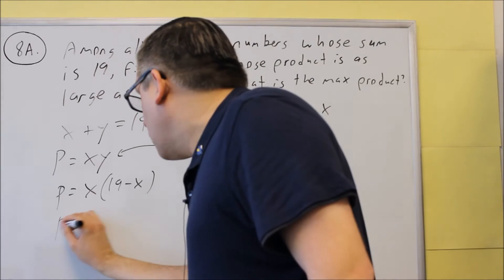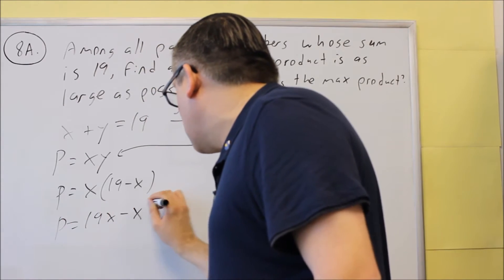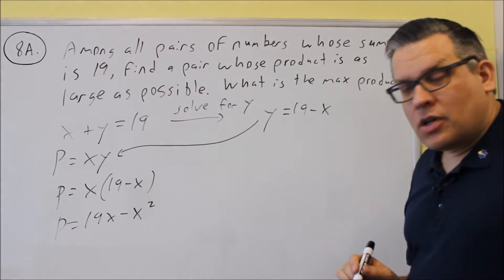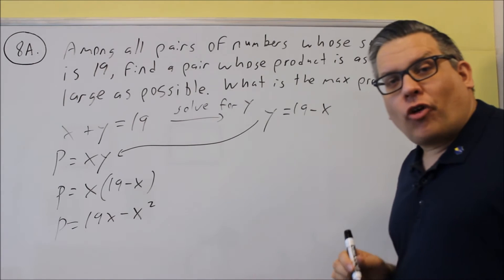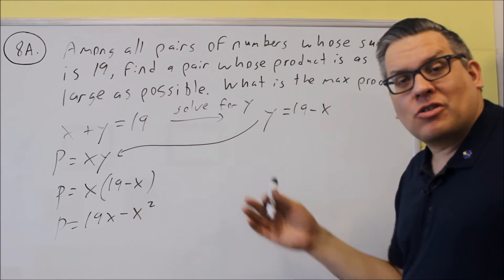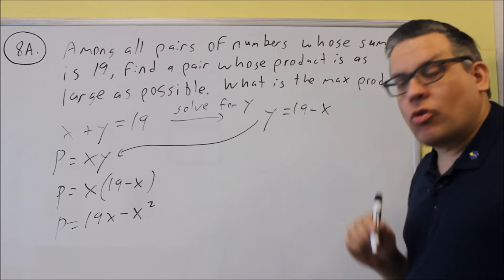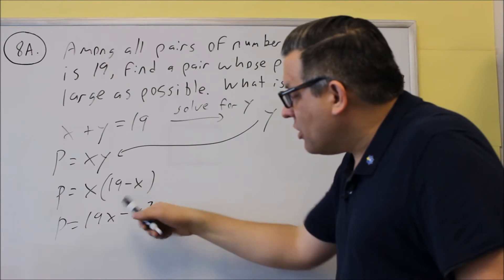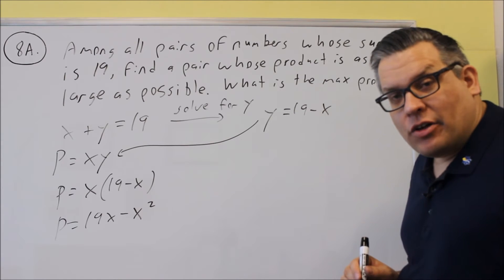Now if we multiply that out, we get 19x minus x squared. This is our quadratic formula that we're now going to work with. And this is the one, whenever it asks for max or min, it doesn't matter, we're always going to use the vertex formula in order to find the x value.